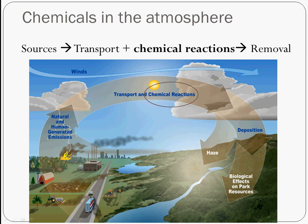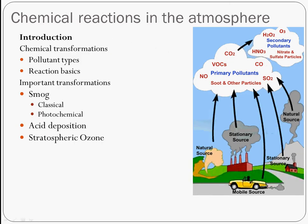The very last topic in this course is essentially atmospheric chemistry, and this is really a whole enormous topic unto itself. There's some pretty interesting chemistry here, so if it interests you, I encourage you to look into it. Here we're going to first talk about some basics about chemical transformations in the atmosphere, the basic pollutant types, reaction basics, and then some important transformations for pollution, especially smog.